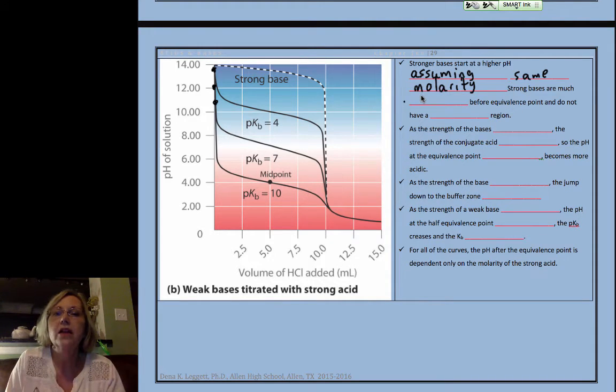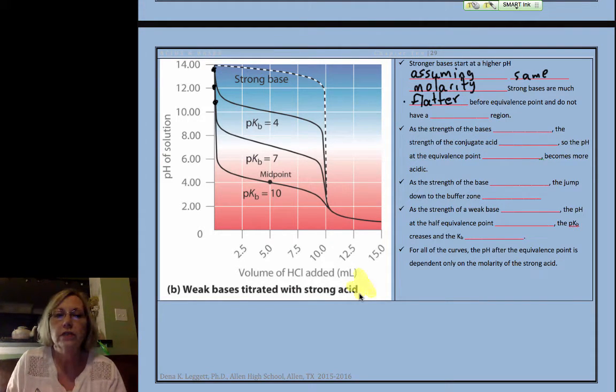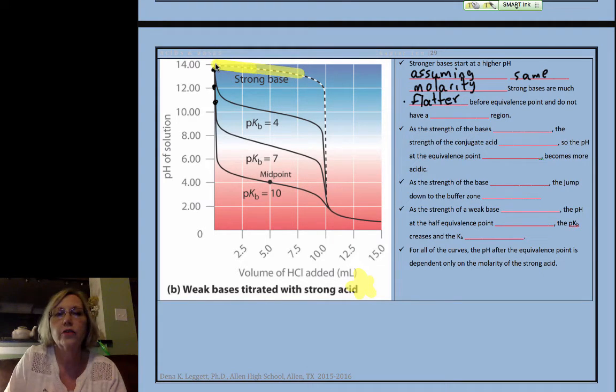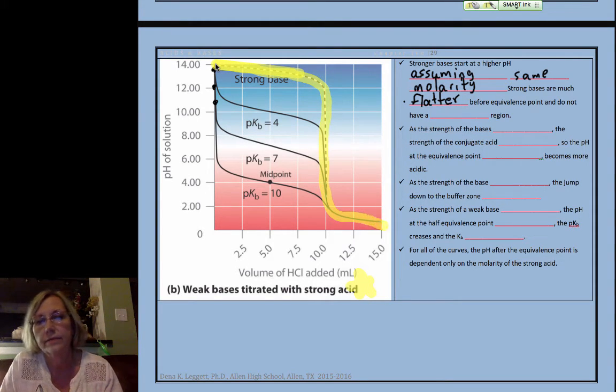Strong bases are much flatter before the equivalence point. Again, it's much like they mirror the, we're now titrating a weak base with a strong acid. It's flat, excess strong base, excess strong base, excess strong base, and then plummet when we get to excess strong acid.